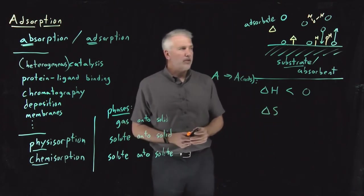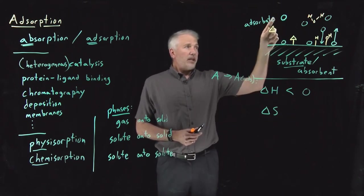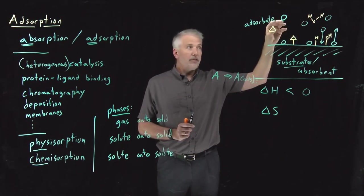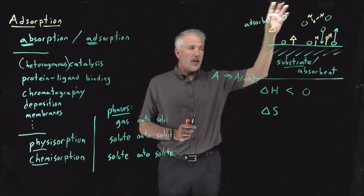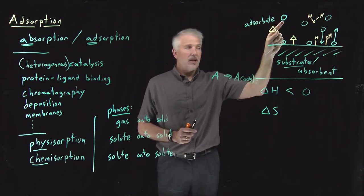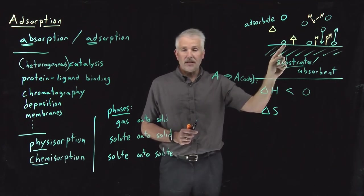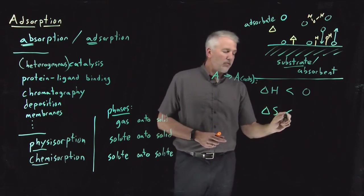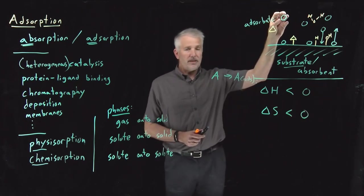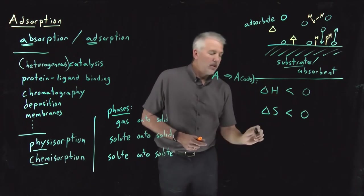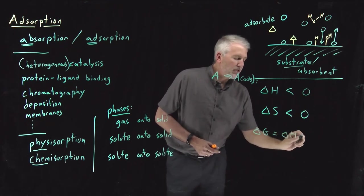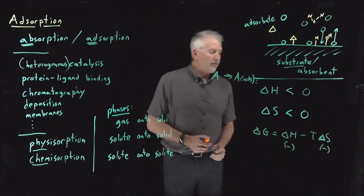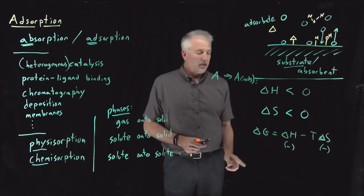Entropy — you might think about what the sign of the entropy change is going to be. In the dissociated, desorbed state, these molecules in the gas phase or solution phase have a lot of configurational entropy; they can move throughout the gas or solution, so they have relatively high entropy. When they're bound to the surface, however, there are many fewer states they can occupy, so I've reduced their entropy when adsorbed. When the molecule binds to the surface, its entropy goes down. So if we ask about the free energy: if the enthalpy is negative and the entropy change is also negative, the sign of delta G depends on which term dominates.